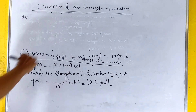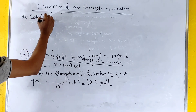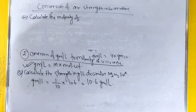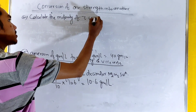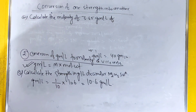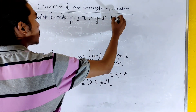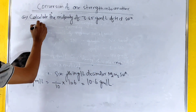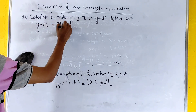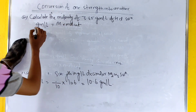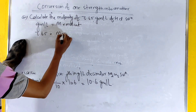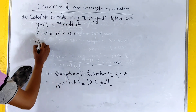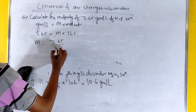Calculate the molarity of 3.65 gram per liter of HCl solution. Using the formula gram per liter equals molarity into molecular weight: 3.65 equals molarity into 36.5.